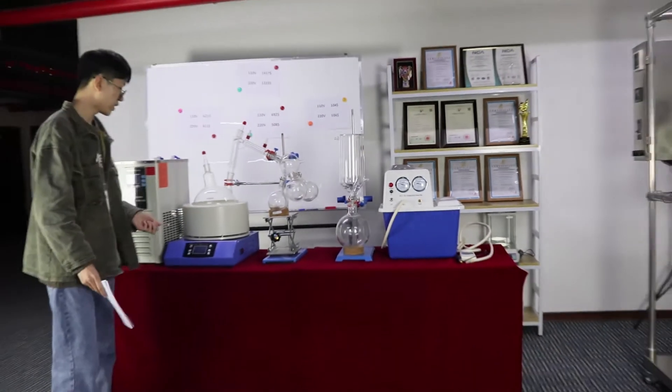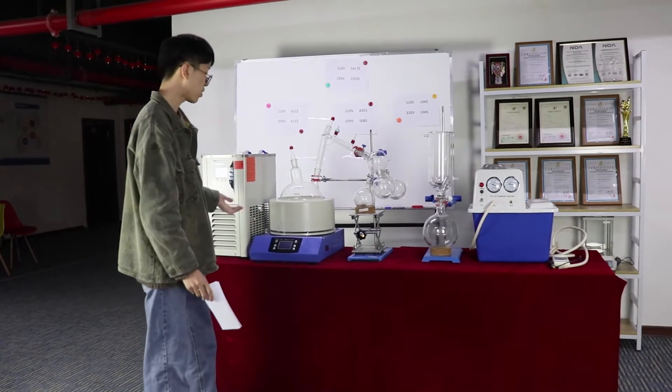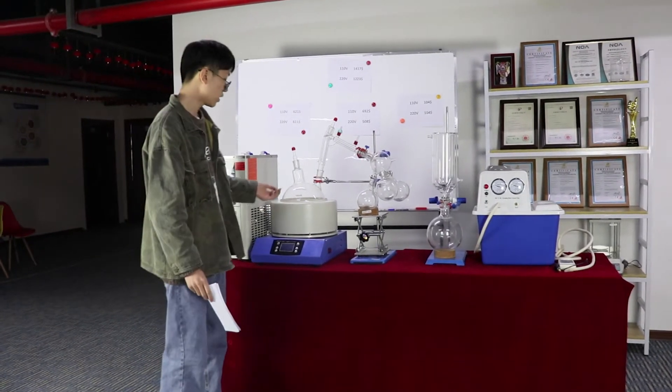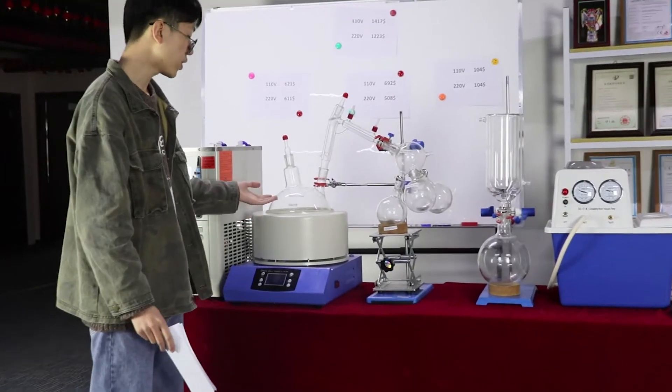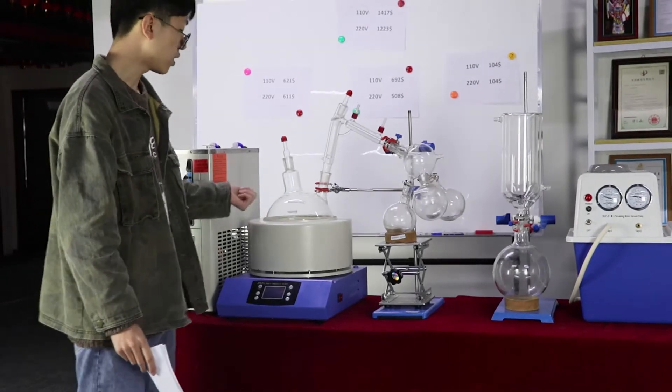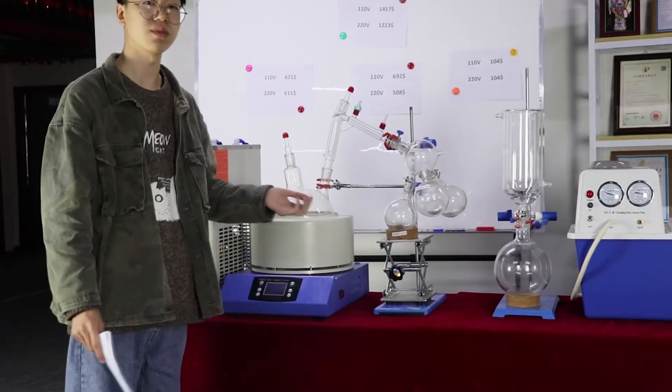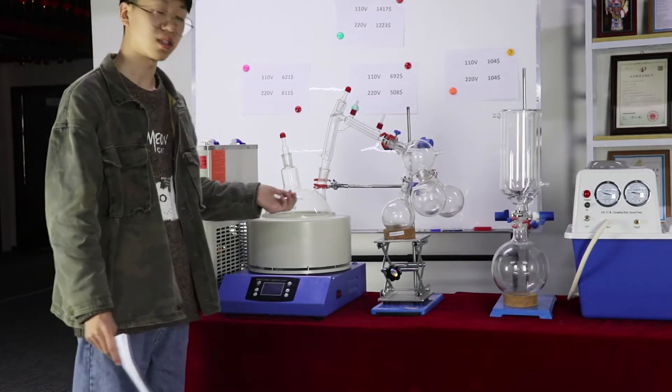Okay, first, let me show the short path distillation. This is my component, the evaporator bottle and magneton. The magneton is in the evaporator bottle. It can store the material.